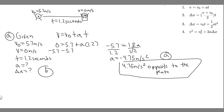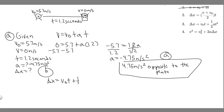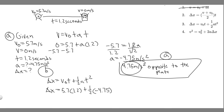Now let's move on to Part B — finding how far the chicken slid, so we're solving for delta X. Now we also have A, which is minus 4.75 meters per second squared. We can use any equation that contains delta X since we now have every other variable. The equation I'll use is delta X equals V₀ times T plus one-half times A times T squared. We plug in: V₀ is 5.7 times T which is 1.2 seconds, plus one-half times minus 4.75 times T squared.